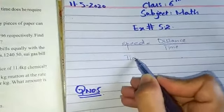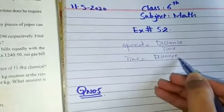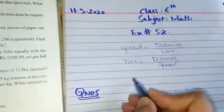And from this, the formula of time is distance divided by speed. Sorry, distance divided by speed.